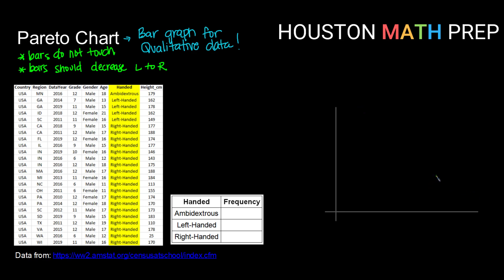Other than that, everything is going to be pretty much the same. In this example, let's look at creating a Pareto chart for dominant hand. This is our census data that we've been working with. Let's start by creating a quick frequency chart. My three categories are ambidextrous, left-hand dominant, or right-hand dominant.